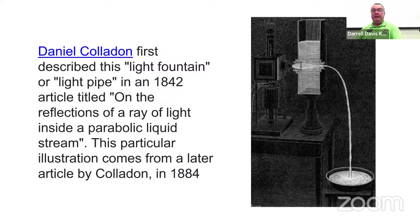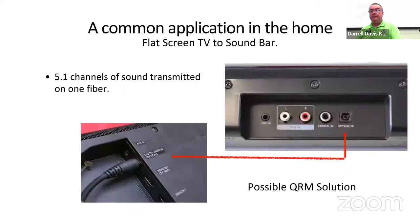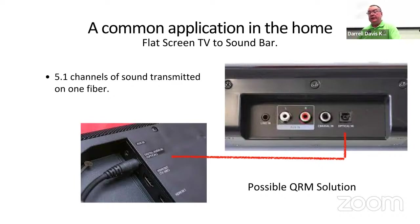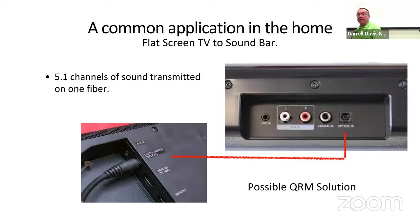The article was published in 1884. So where might you have fiber in your house? If you have a TV with a soundbar, you might have an optical connection — the 5.1 channels of sound transmitted from your TV to your soundbar. It'll say 'optical in.' And if you're having problems with a neighbor hearing your radio on his surround sound speakers, and he's not using an optical fiber to transmit the signal, that might be a solution you could work with him on.